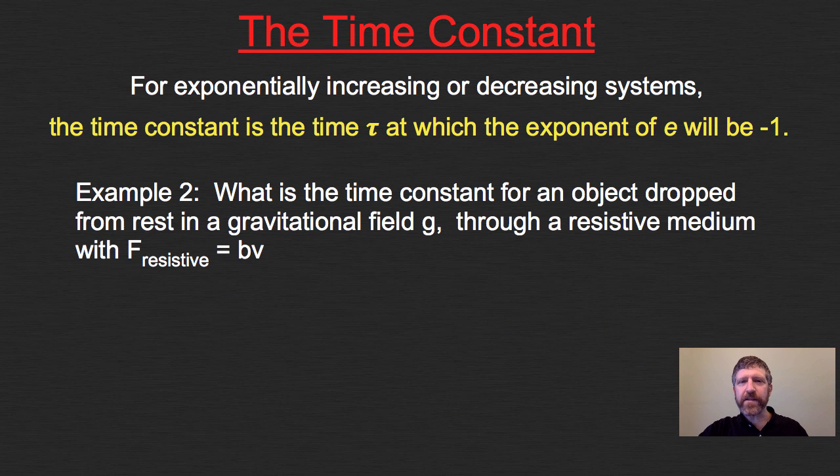Let's try one more. What's the time constant for an object dropped from rest in a gravitational field g through a resistive medium? Again, the resistive force is bv. As you recall, V = V_terminal * (1 - e^(-bt/m)).